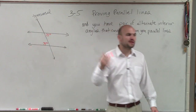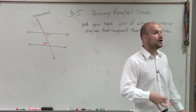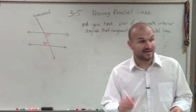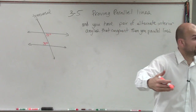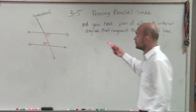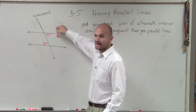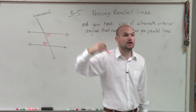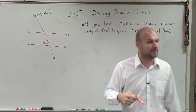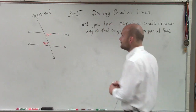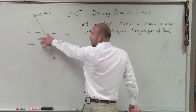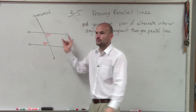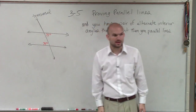You guys remember I told you before, don't assume lines are parallel unless I tell you they're parallel, or you see those little arrows on the lines. Well, here's another way to know if you have parallel lines: if you see alternate interior angles that are equal, you know your lines are parallel.